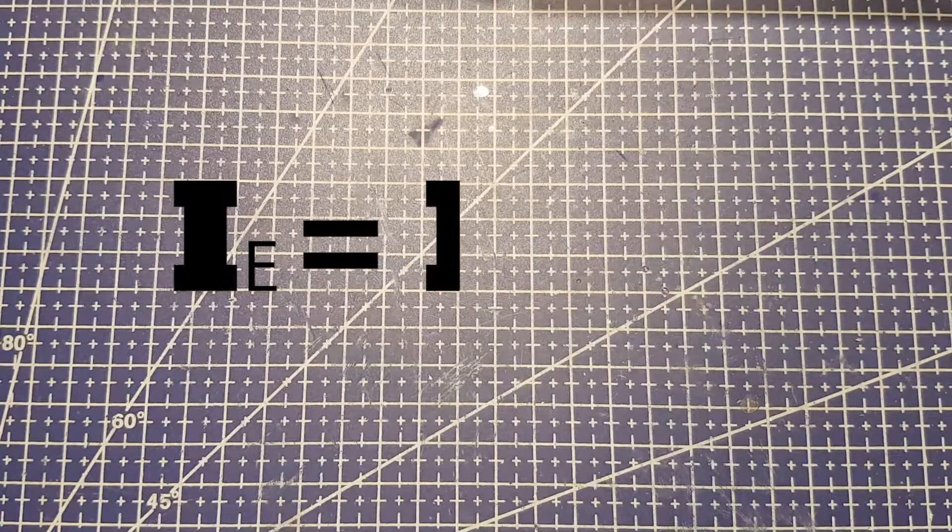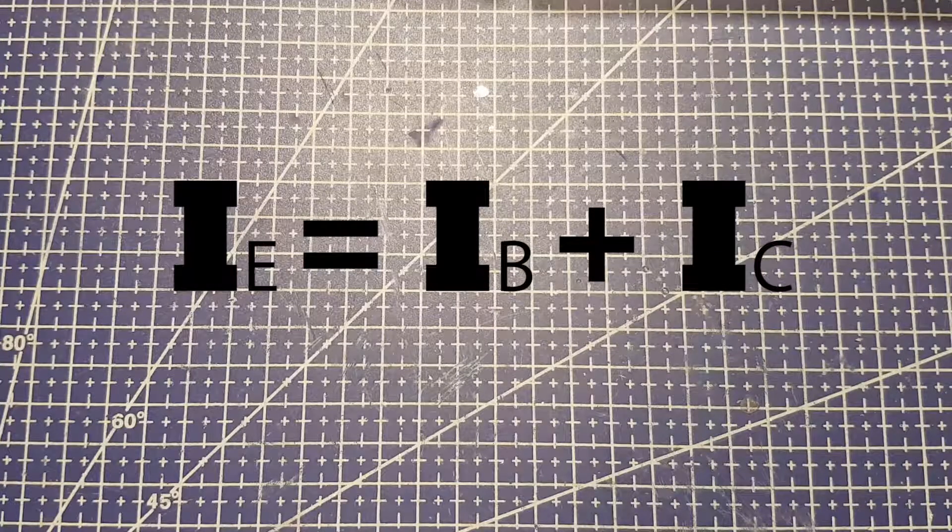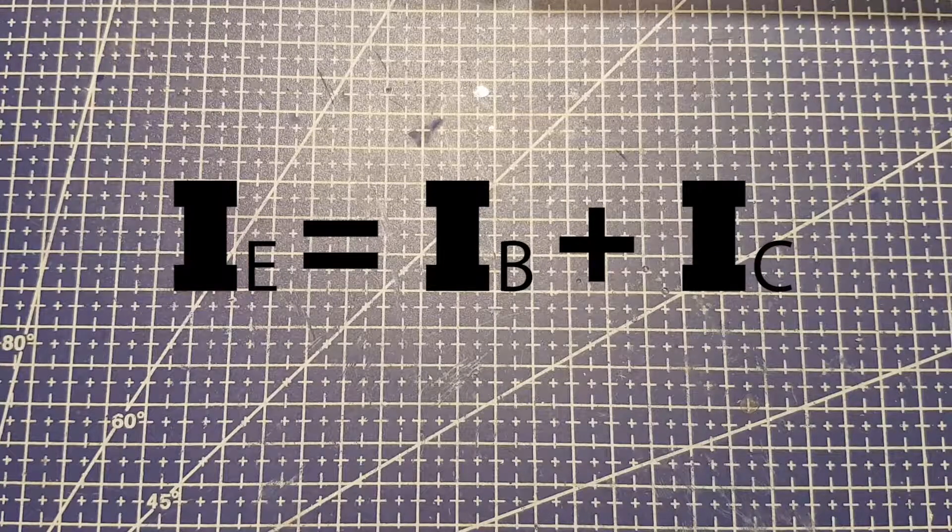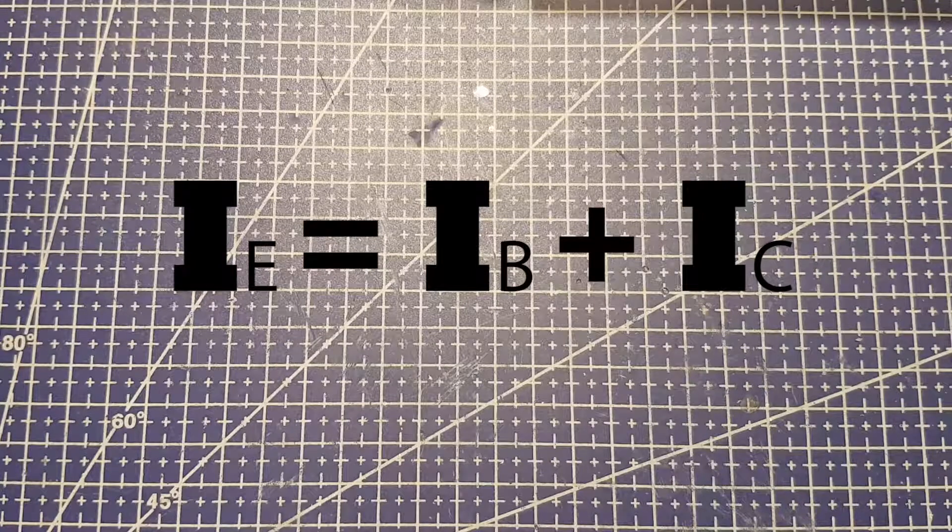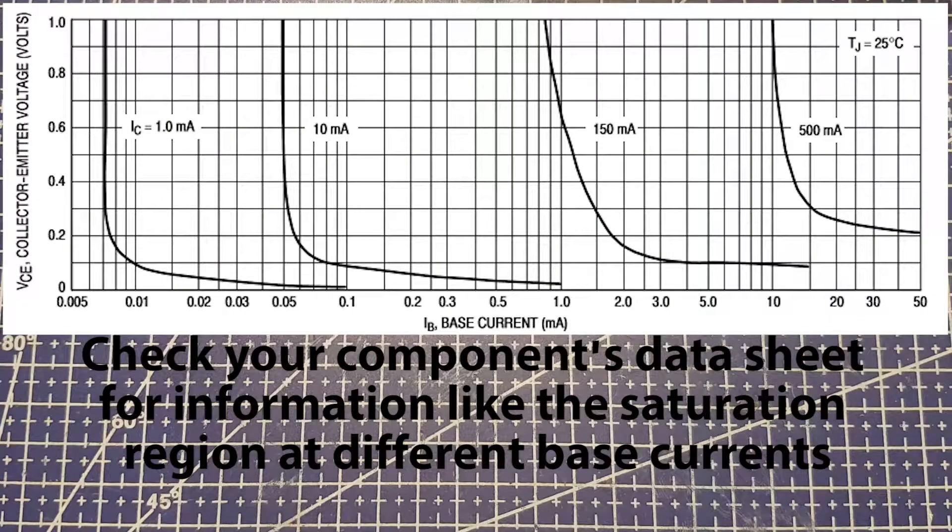The total current flowing out of the emitter is the sum of the current from base to emitter and collector to emitter. And this is why they can be used as an amplifier. And when they're used as an amplifier, they're said to be in the active region.